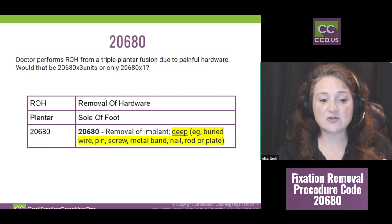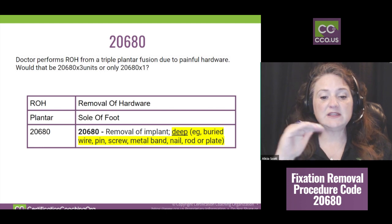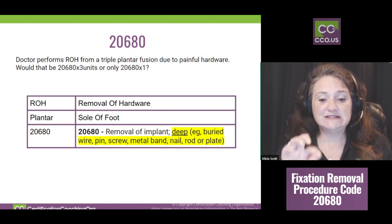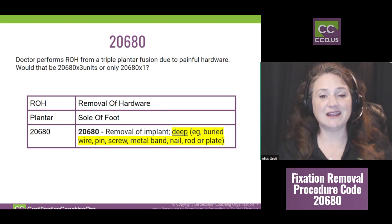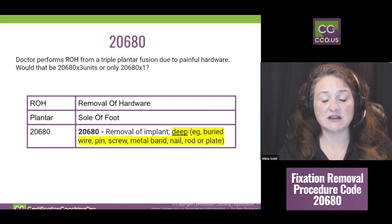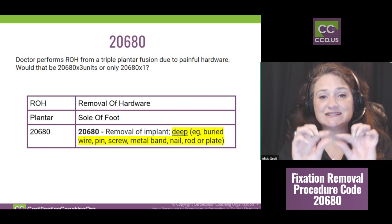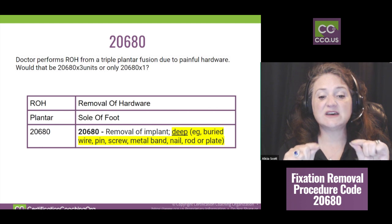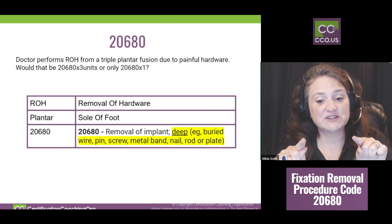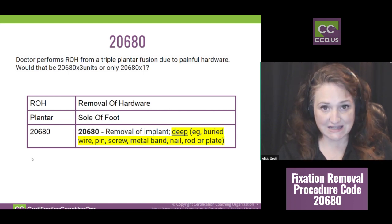Code 20680's definition is removal of implant — ROH, removal of hardware. Using the BAT technique, notice that I've underlined 'deep,' and everything behind the semicolon should be highlighted: buried wire, pin, screw, metal bands, nail, rod, or plate — those are things put into you to hold bones together. The other code is 20670, and the only difference is that one says 'superficial' — so you want to underline 'superficial' there.